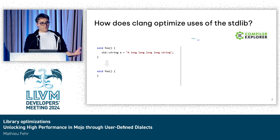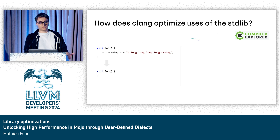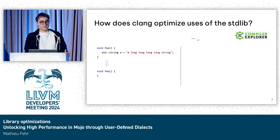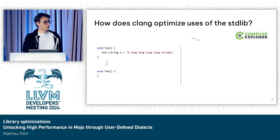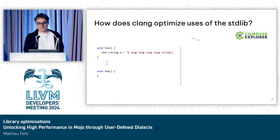One problem we have — and that's not only for string, but also for other data structures — is that the compiler needs to inline everything to be able to understand what it is doing. And that's kind of one fundamental problem we have in C++.